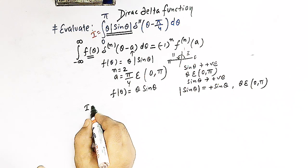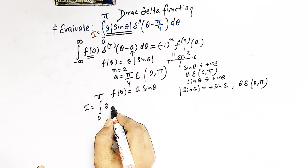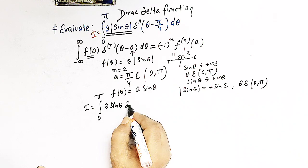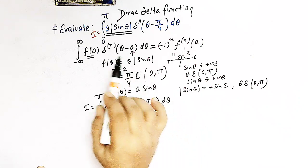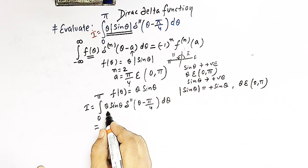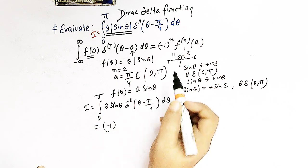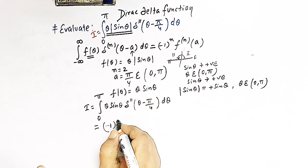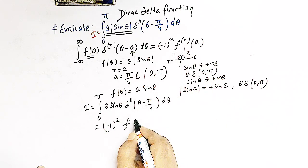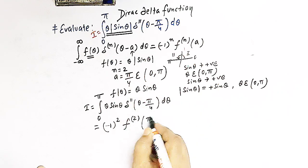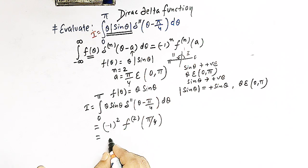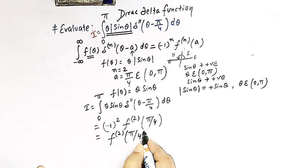We can now write the integral I as the integral from 0 to π of θ sin θ times δ''(θ − π/4) dθ. Applying the property, the value is (−1)^2 times f''(π/4). Since (−1)² = +1, the integral equals f''(π/4).